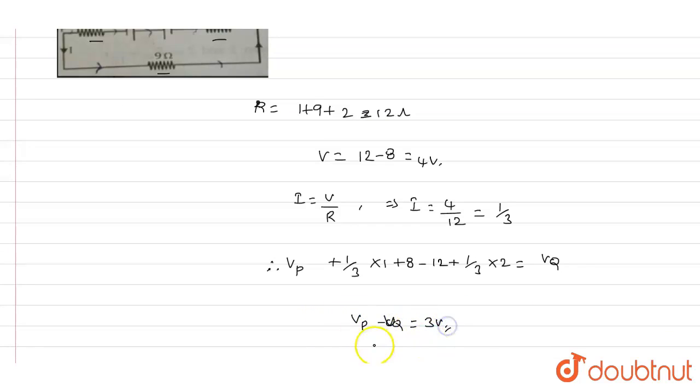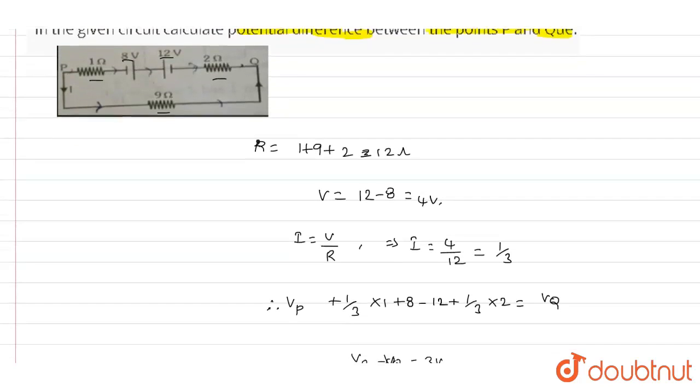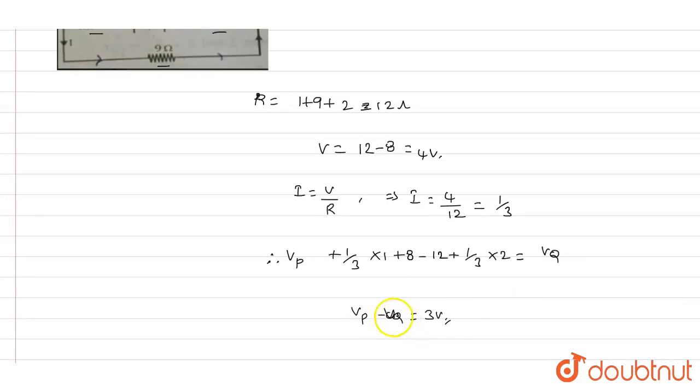Okay, so this is the potential difference between the points P and Q that we have found. So we have got 3 volts as the answer, so this is the correct answer for this question. Thank you.